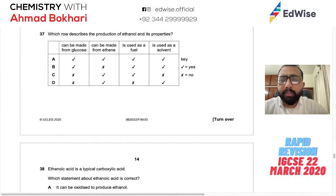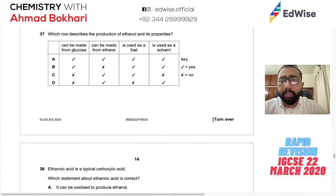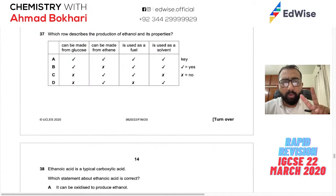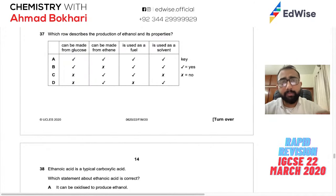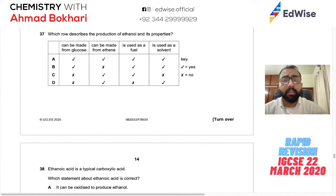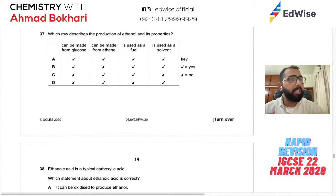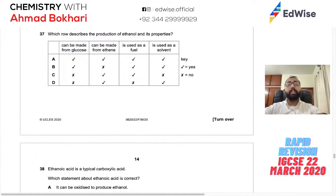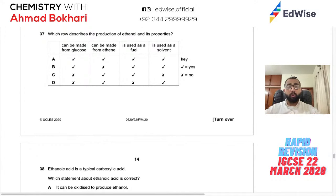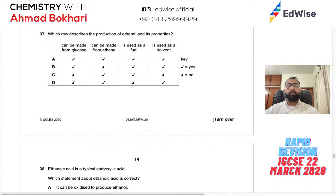Question 39: Ethanol production. Method 1: add water to ethene at high temperature using phosphoric acid catalyst (IGCSE need to know it's phosphoric acid). Method 2: fermentation — glucose plus yeast as catalyst. Ethanol is used as a fuel and as a solvent. All four properties/facts in the correct option are true. Answer: D.